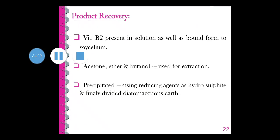For riboflavin recovery, riboflavin is present in solution as well as bound form to the mycelium. Acetone, petroleum ether, and butanol are used for extraction of riboflavin from the fermentation broth. It is precipitated using reducing agents such as hydrosulphite and finely divided diatomaceous earth.